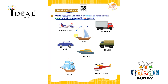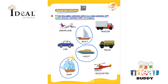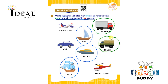So boat, yacht, and ship are the water vehicles. After that they have to encircle the road vehicles with green color — so trailer, truck, and car are the land vehicles. And they have to encircle the air vehicles using red color.